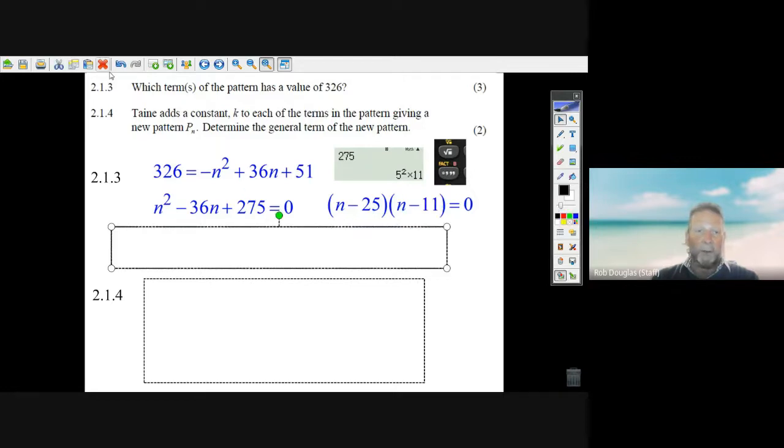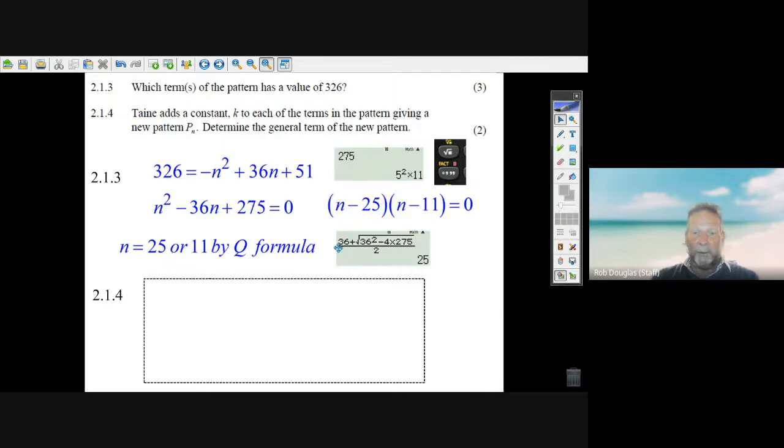Hey, you could have just used the quadratic formula. Put in 36 plus, put it into the formula, you get n equals 25. When you put in the minus, you'll get 11. So you could get 25 and 11 by the quadratic formula. So the 25th term and the 11th term give you 326. The last question is.